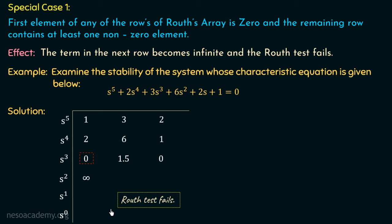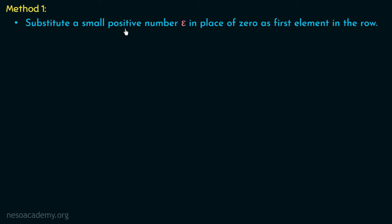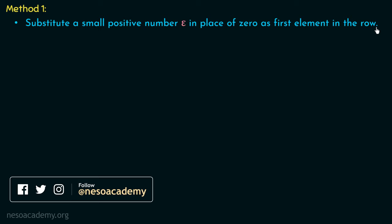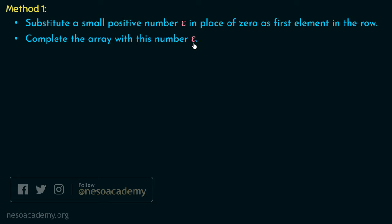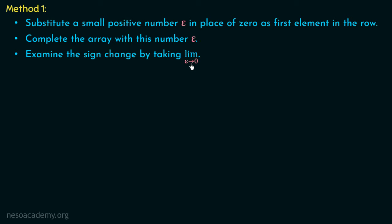There are two different methods to overcome this problem. In Method 1, we substitute a small positive number epsilon in place of 0 as the first element in the row. Then we complete the array with epsilon, and then examine the sign changes by taking the limit as epsilon tends to 0. Let us apply this method to examine the stability of the same system.